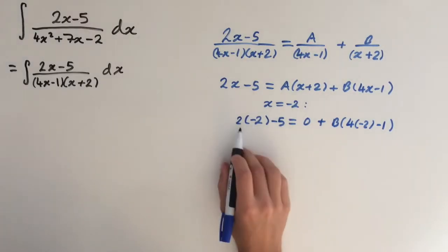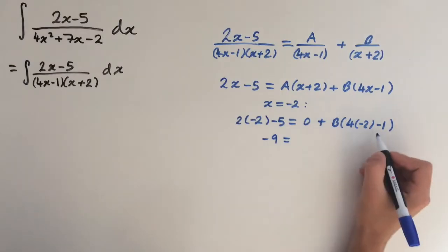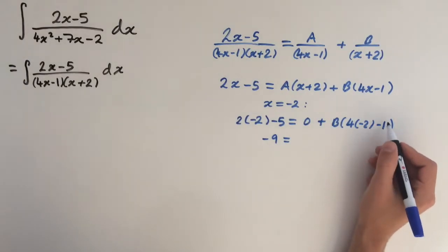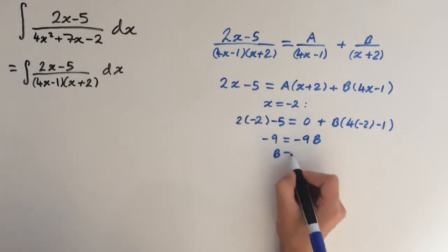So left hand side here is going to be minus 4 minus 5, which is minus 9. Right hand side is going to be 4 times minus 2 is minus 8, minus 1 is also minus 9. So minus 9 times B. So you can see B is going to equal 1.